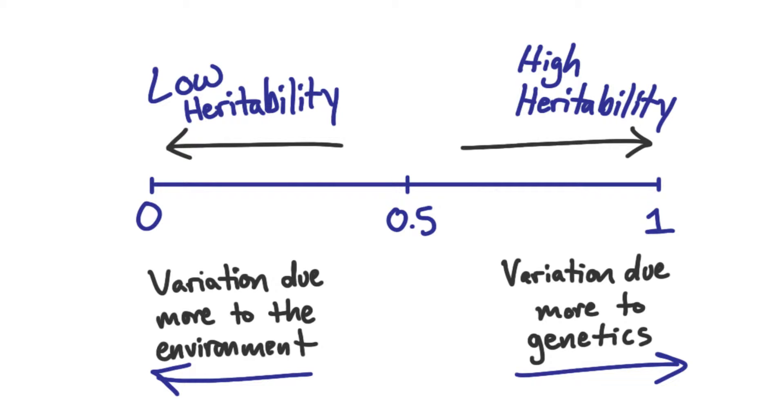For example, when people talk about the heritability of a disease, they're referring to how much of differences in risk for that disease across the population is due to genetics. Okay, so it's not the same thing as saying how much of a trait is genetic. Exactly — those are two different things: whether or not a trait is caused genetically versus whether the variability in a trait is due to genetics.